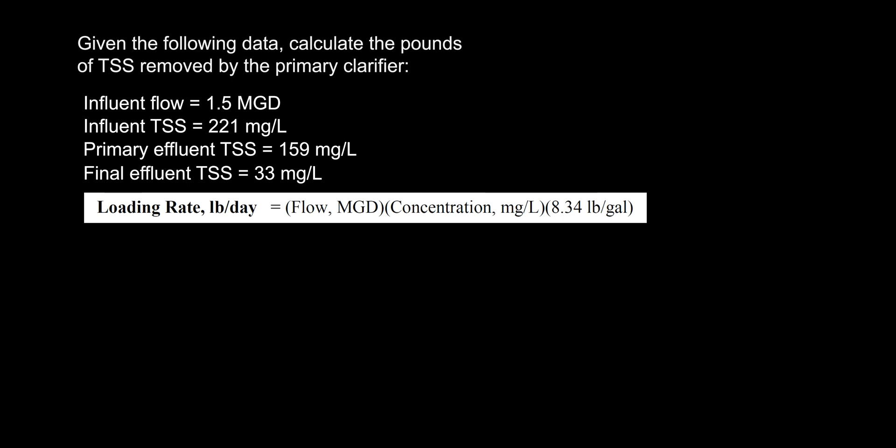Something to note about this question is that, like a couple of others on this test so far, it tries to trick us by throwing in extra information we don't need. Specifically, this question gives us the final effluent TSS data. However, this question only asks about the TSS removed by the primary clarifier, so the TSS in our final effluent is irrelevant — cross it out so it doesn't confuse us.